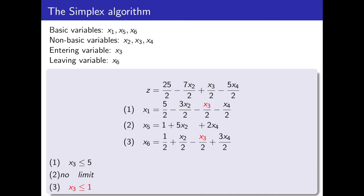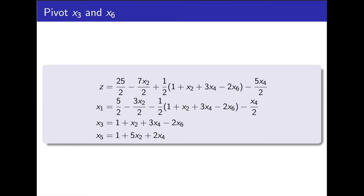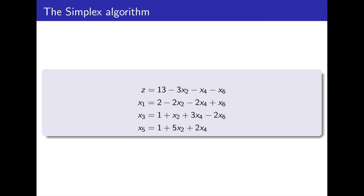Beginning now the second iteration, we have only one choice for our entering variable — x3 — since this is the only one with a positive coefficient in the objective function. Again, we increase its value until one of the constraints becomes tight. The tightest constraint is equation 3, so we pivot x6 and x3. Pivoting x3 and x6, we swap the role of x3 by making it the subject of the tight constraint, and our leaving variable x6 becomes a non-basic variable. We replace all instances of x3 with its right-hand side representation. Thus, we have obtained this new equivalent slack form of the linear program.